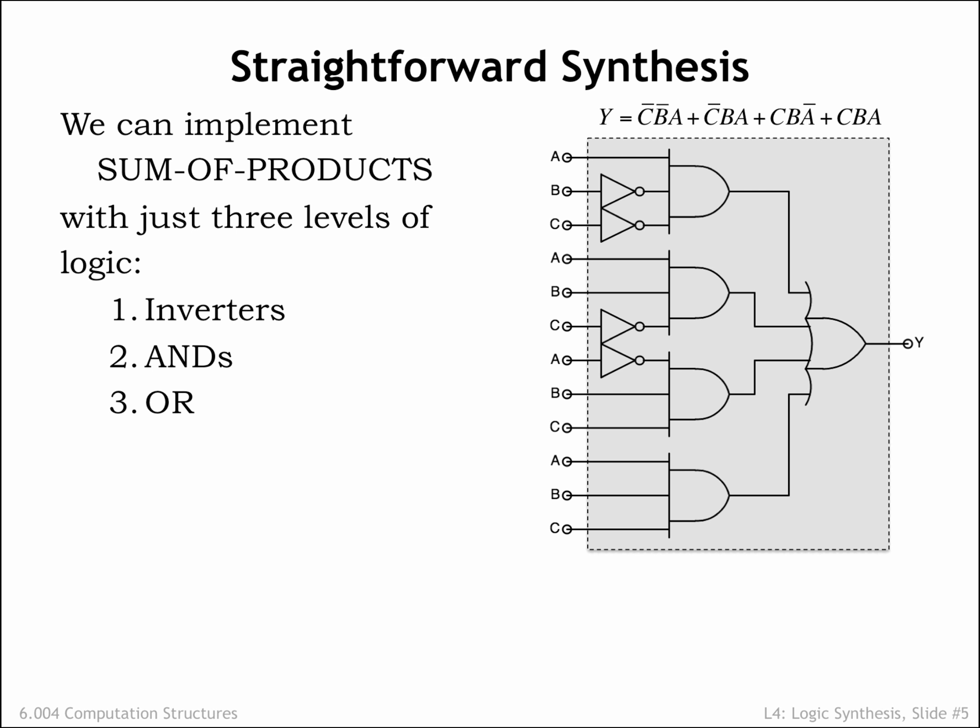In a SUM-of-Products equation, the inverters are operating on particular input values, in this case A, B, and C. To keep the schematic easy to read, we've used a separate inverter for each of the 4 NOT operations in the Boolean equation.